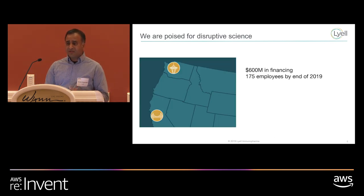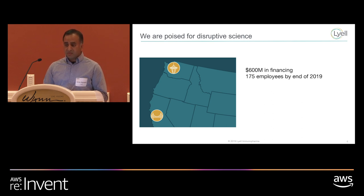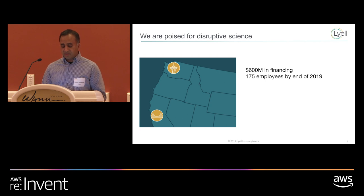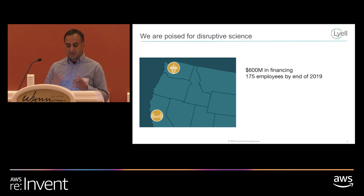We've been around for a little over a year, we've raised $600 million in financing, and we're going to be around 175 employees by the end of the year. We have two offices — one in South San Francisco and one in Seattle. We really feel that it's this convergence of financing, number of employees, and the top minds in this field that really poises us to be the leaders and solve this unmet need of therapies for solid tumors.